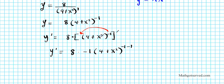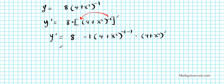Notice this is a nested function — we have a function within a function. So we apply the chain rule and differentiate the inner function, which is 4 plus x squared. The derivative of 4 is 0, and the derivative of x squared is 2x. So the outer derivative is negative 8 times (4 plus x squared) to the negative 2, multiplied by 2x.